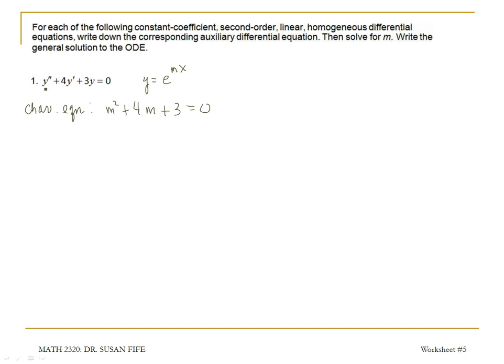because remember that when you substitute in, you're going to have that e to the mx in all your terms. But for your y prime, you'll have a coefficient of m. For y double prime, you'll have a coefficient of m squared. And when you factor out that e to the mx, you're left with this characteristic equation.